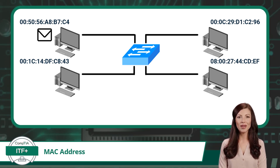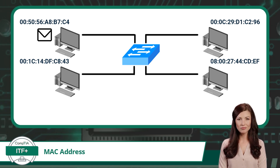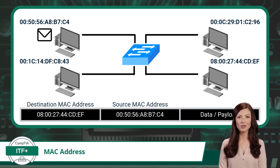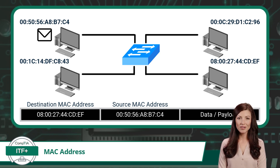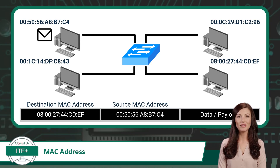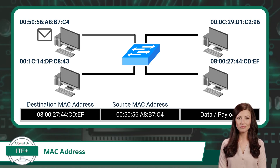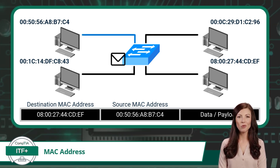Let's see this in action. A data packet needs to be sent — the workstation in the top left of our diagram has a data packet to send to another device in our local area network. The workstation encapsulates the data into an Ethernet frame. The Ethernet frame includes the destination MAC address, the workstation's own MAC address known as the source MAC address, and the data or payload to be sent.